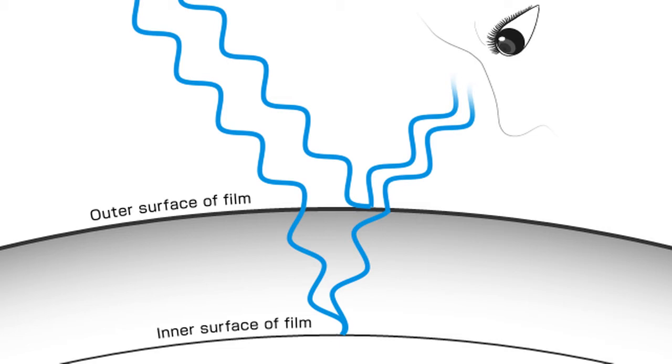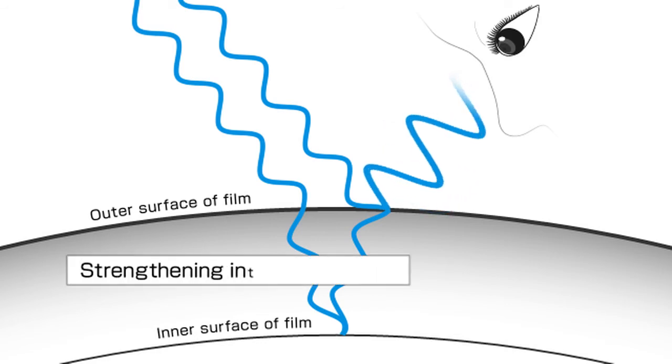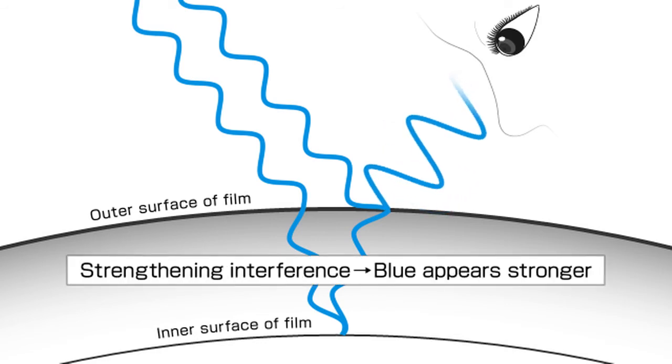These two beams of light create interference. If the peaks and troughs of these two waves match up, the wave becomes larger, and the blue light appears stronger.